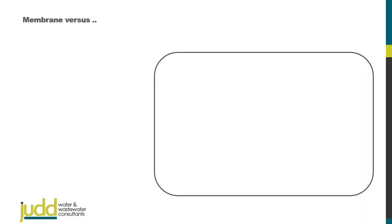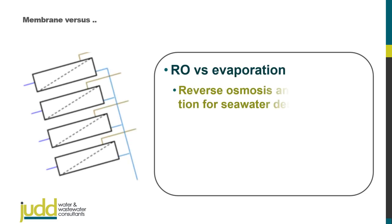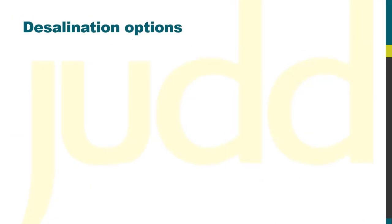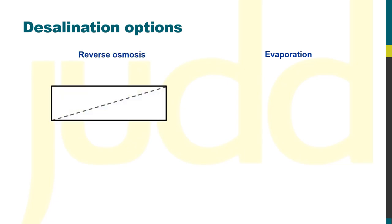This video is part of the Membrane Versus series and this one compares reverse osmosis with evaporation for seawater desalination. There are two ways of separating salt from highly saline solutions such as seawater: the water can either be evaporated or permeated through a reverse osmosis membrane.